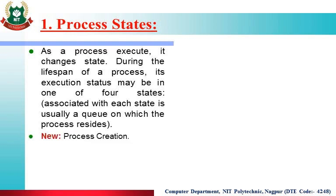First state is New — here the process is created. That means a program exists and you double-clicked it to execute it, so now the program is a process, and we say the state of the process is New. Second state is Running — instruction execution. If the process is generated (meaning it is in RAM) but has not yet gone to the CPU, once it goes to the CPU, we call that state the Running state, because the instructions of the process have started executing.